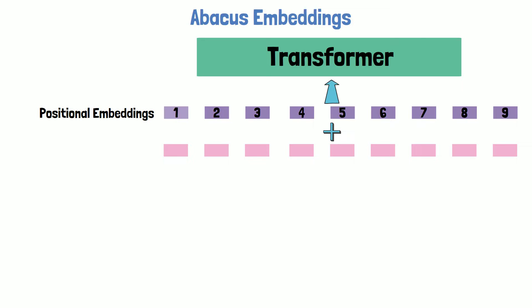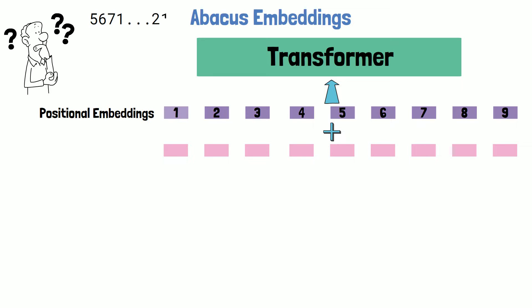However, when humans calculate addition of large numbers, we organize the digits in columns by the digit position in each number, and positional embeddings until now do not embed the position of each digit within each number.